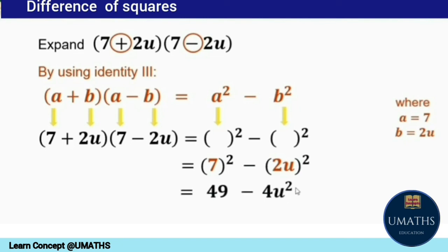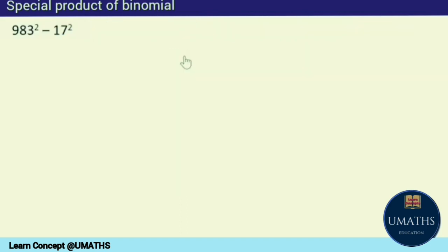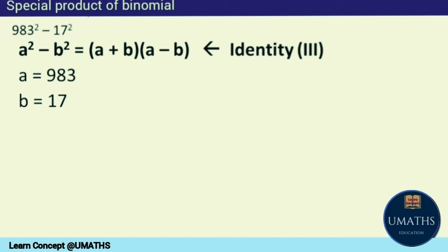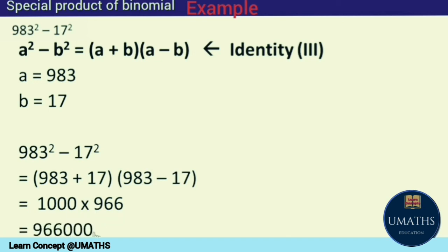Let us solve one more example: 983 squared minus 17 squared. Looking at this expression, we can apply the identity a squared minus b squared equals a plus b times a minus b, with a as 983 and b as 17. This gives us 983 plus 17 times 983 minus 17. Adding gives 1000, and subtracting gives 966. Multiplying 1000 by 966, we get 966,000.